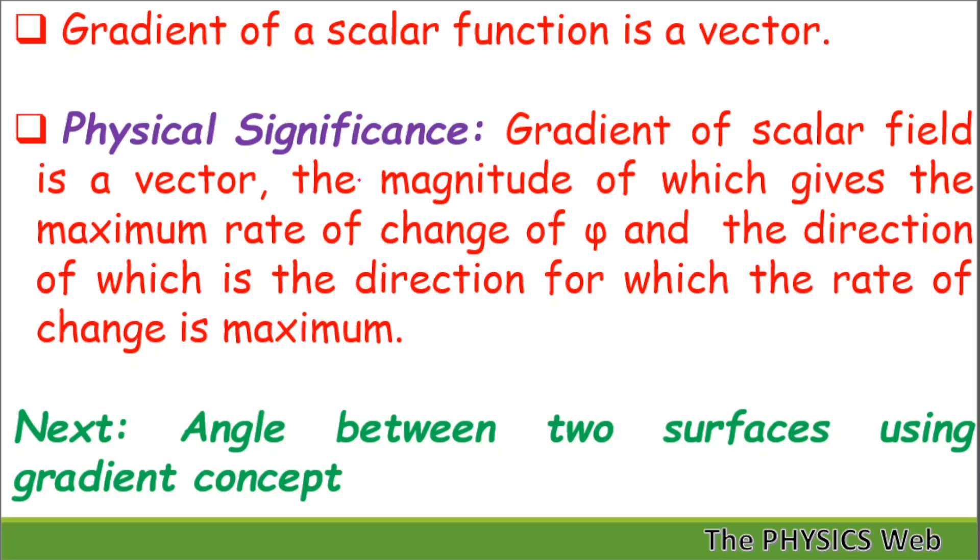Gradient of this scalar function is a vector quantity. Its physical significance: the magnitude gives the maximum rate of change of this scalar function phi, and the direction is the direction for which the rate of change is maximum. There are various important problems related to this gradient concept we will discuss in a separate video. In the next video, we will discuss how to calculate the angle between two surfaces using the gradient concept.